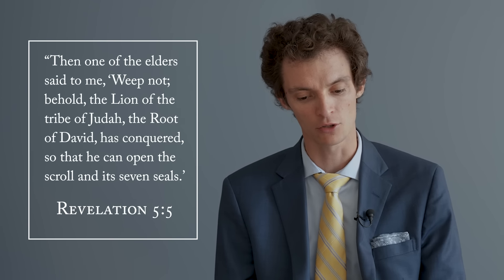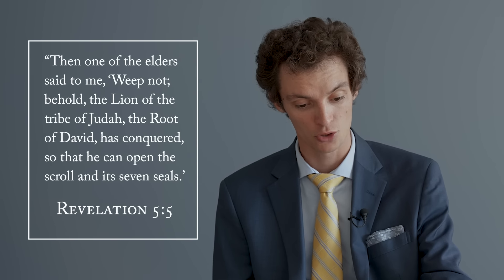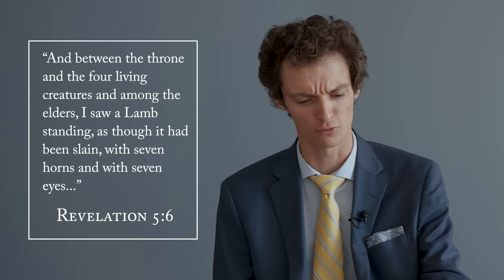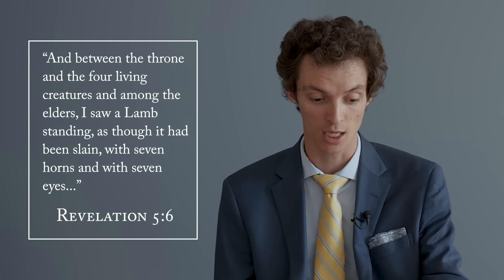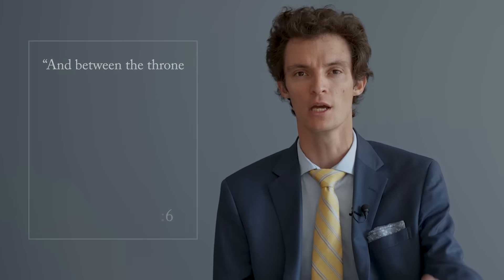One of my favorite examples of this is in Revelation chapter 5. Then one of the elders said to me, Weep not. Behold, the lion of the tribe of Judah, the root of David, has conquered, so that he can open the scroll and its seven seals. And between the throne and the four living creatures and among the elders, I saw a lamb standing, as though it had been slain. What's striking about this is that when this elder is speaking to John the seer, he says, Behold, the lion of the tribe of Judah. So, we would think that perhaps what we're about to see is a lion, but what do we actually see? I don't see a lion. No, what I see is a lamb standing as though slain.